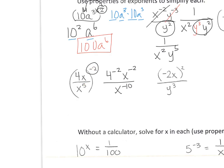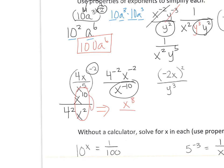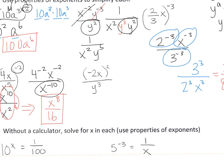Over here, some people switch these right away if the whole thing is negative, but it doesn't matter how you do it. I'm just going to distribute each negative 2. Don't forget to do the bottom 2 — 5 times negative 2 is negative 10. Then I'm going to flip them, so it's going to be 4 squared, x squared, and x to the 10th on top. If you have 10 x's on the top and 2 on the bottom, you're left with 8 x's on the top, because 10 minus 2 is 8, and 4 squared is 16.